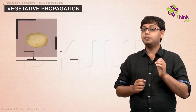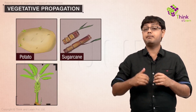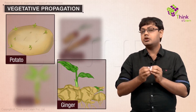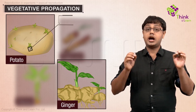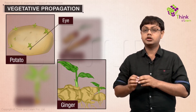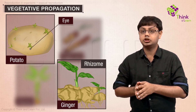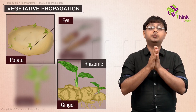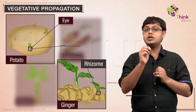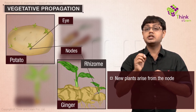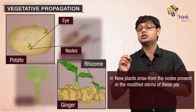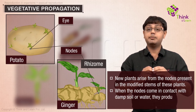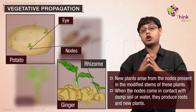If you have been keen in observing how plants like potato, sugarcane, banana, and ginger are cultivated, you would have seen small plants emerging from buds called eyes of the potato tuber, or from the rhizomes of banana and ginger. If you carefully try to determine the site of origin of these new plantlets, you will notice that they invariably arise from the nodes present in the modified stems of these plants. When the nodes come in contact with damp soil or water, they produce roots and therefore new plants.